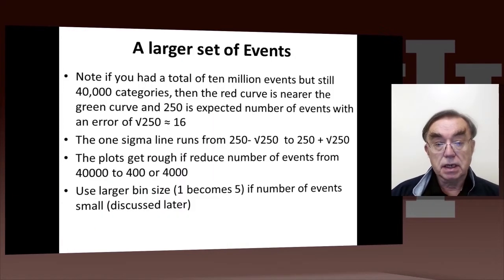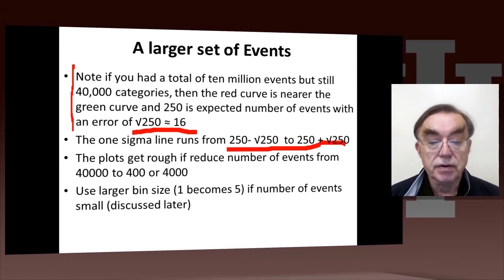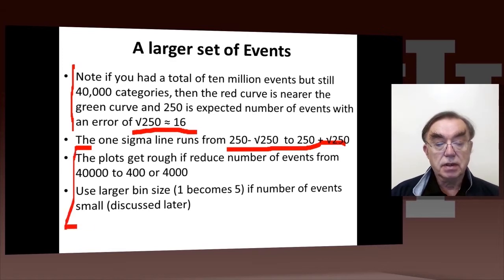And we can see that later when we actually plot the error bars. And so this slide here goes through this, what I just said. We have 10 million events, but still 40,000 categories. The square root of 250 is around 16, less than 16. We run the 1 sigma line from 250 minus the square root of 250 to 250 plus the square root of 250. We'll see later that the plots get rougher when we reduce the number of events. But we want to do a few other things before we discuss that.